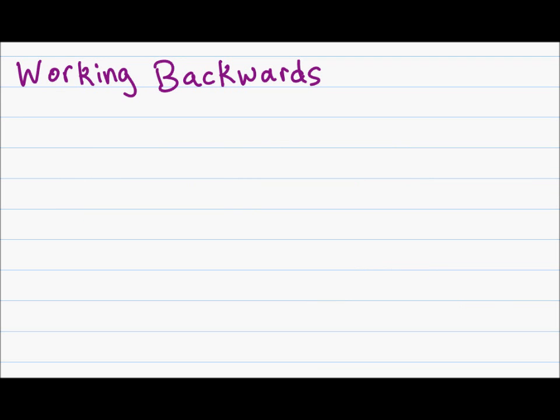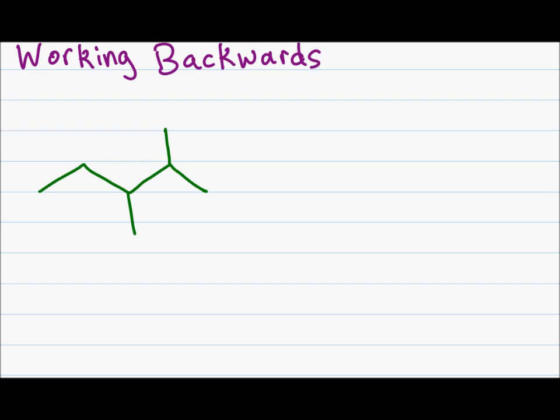You will sometimes be asked to give the condensed or Lewis structure for a skeletal representation of a molecule. So let's see how to work backwards with this example. First thing to do is number your structure. For the Lewis structure, I have five carbons in a row and then I have a sixth carbon on top and a seventh carbon on the bottom.